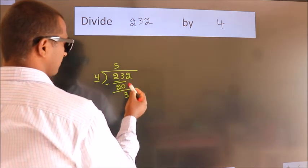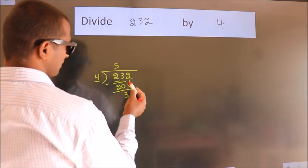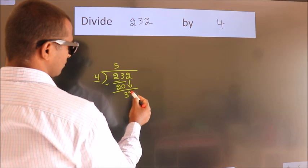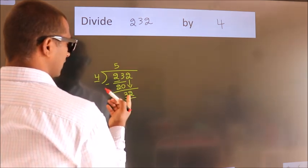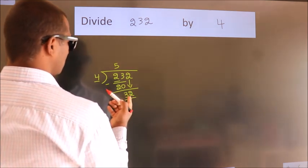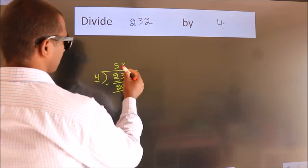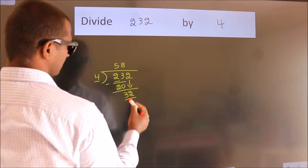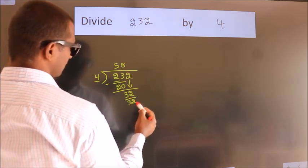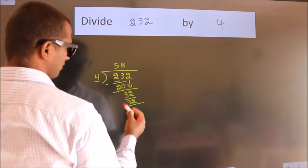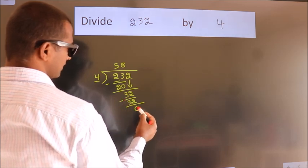After this, bring down the beside number. So, 2 comes down, giving us 32. When do we get 32 in the 4 times table? 4 eights are 32. Now we subtract. We get 0.